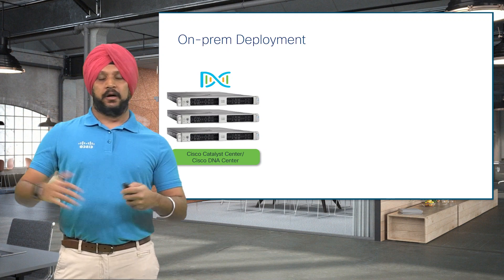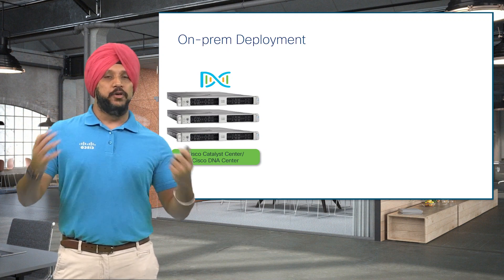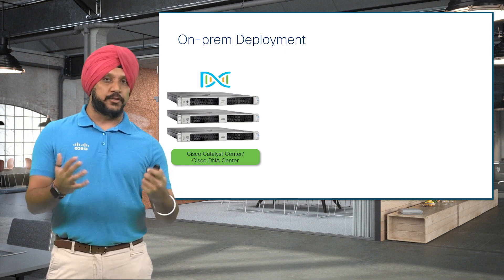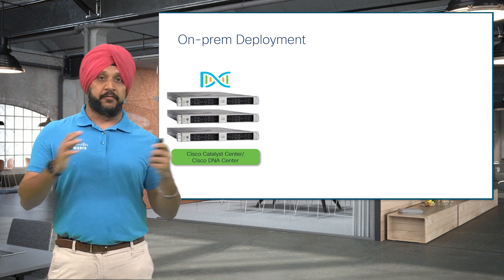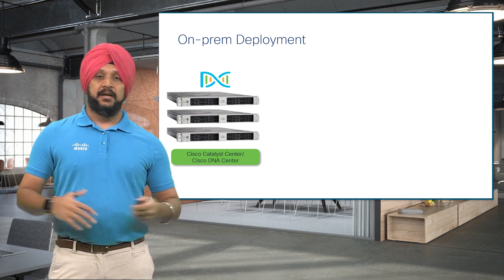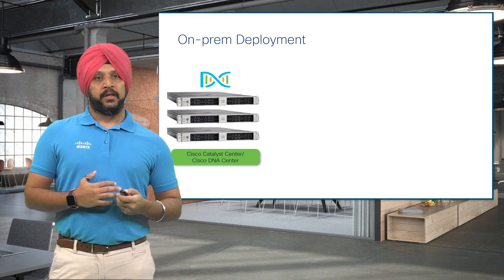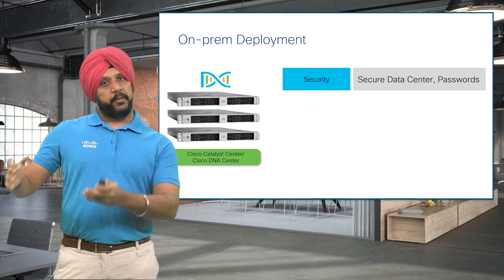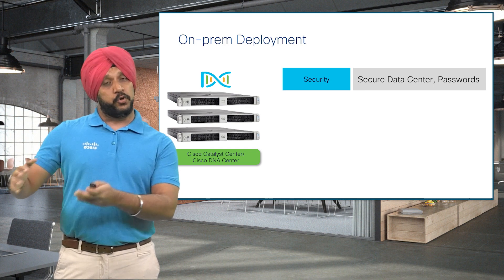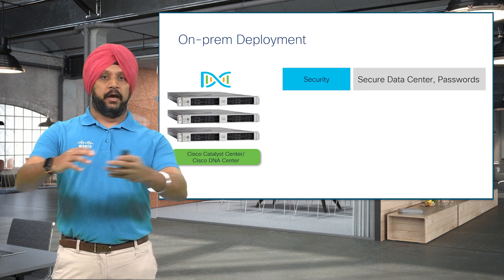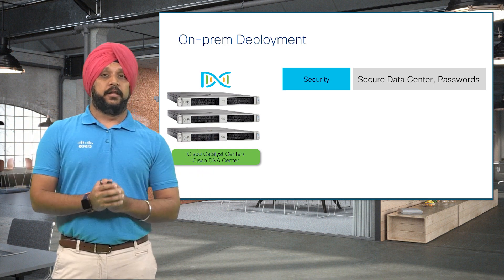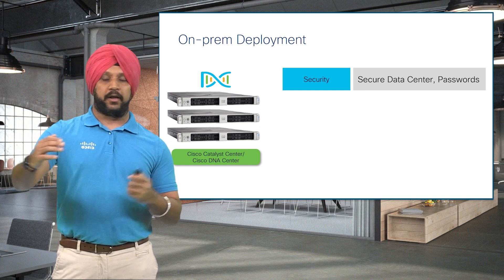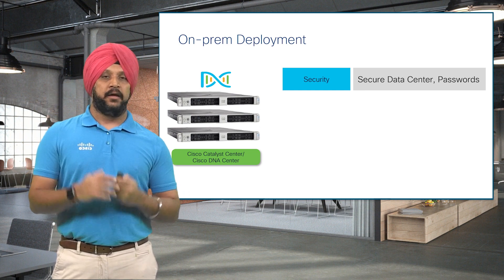I want to start off with how we used to deploy the Catalyst Center or Cisco DNA Center on-premise as a physical appliance and what all things they had to keep in mind. They always had to keep security in mind, keeping the on-premise physical appliance in a secure data center, secured with passwords that only certain folks can access.